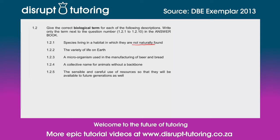1.2.1 — species living in a habitat in which they are not naturally found. Animals or plants existing in our environment that do not occur here naturally are known as exotic species, or alien species.